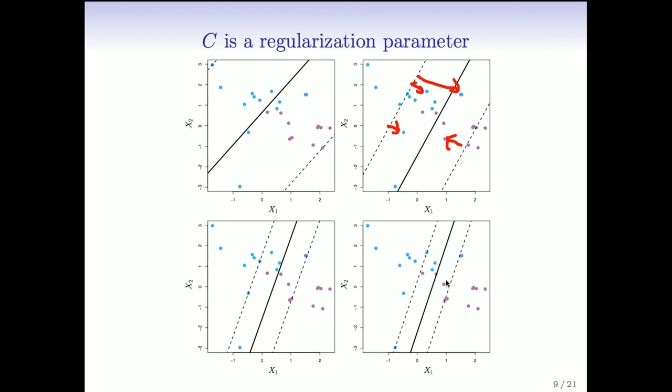And that means as C gets bigger, the more stable the margin becomes, and so there's going to be a kind of bias-variance trade-off as we change C, so it's really a regularization parameter.